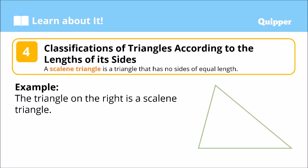Classifications of triangles according to the lengths of the sides. We have what we call a scalene triangle. It is a triangle that has no sides of equal length — ibig sabihin, lahat ng sides ng scalene triangle ay iba-iba ang measurement.